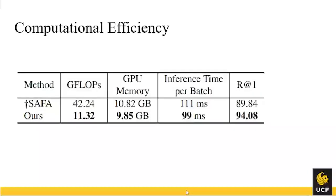In terms of computation, transformer-based methods normally require large GPU memory and large computation in GFLOPs. But evaluated on CVUSA, our method actually has much smaller computation in terms of GFLOPs, smaller GPU memory consumption, and faster inference time.